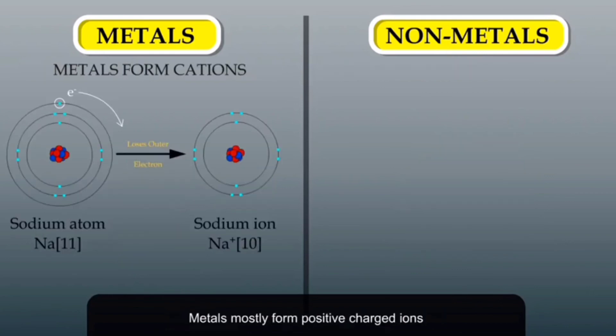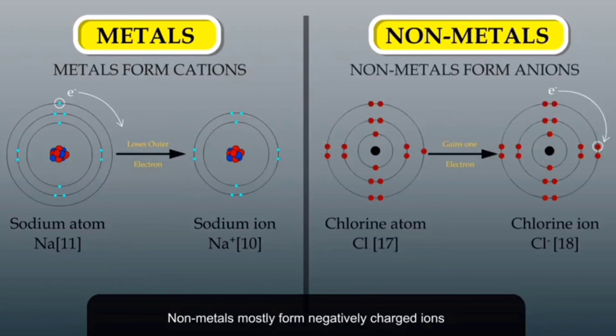Metals mostly form positively charged ions, which are known as cations. Non-metals mostly form negatively charged ions, which are known as anions.